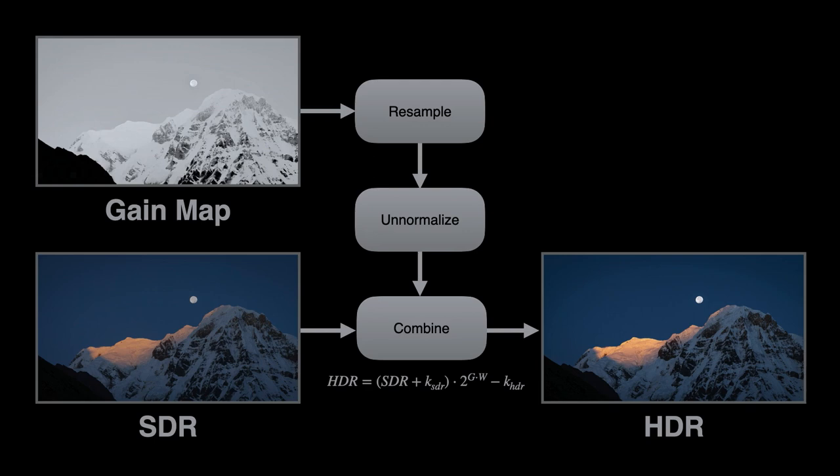The final step is to combine the gain map with the base, and this is where things get interesting. Instead of just applying the gain map directly, we apply a weighting parameter w. We weight the gain map, convert it to a linear scale factor using the exponential base 2, then multiply it with the base, using those two small constant offsets again to avoid numerical issues.